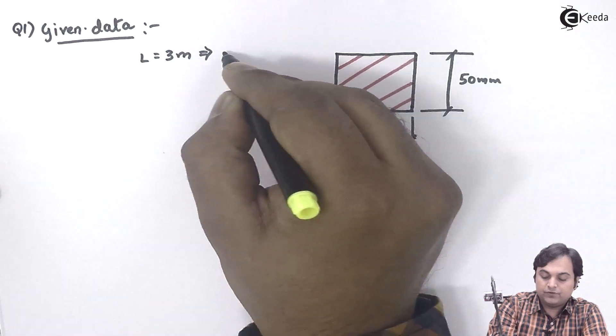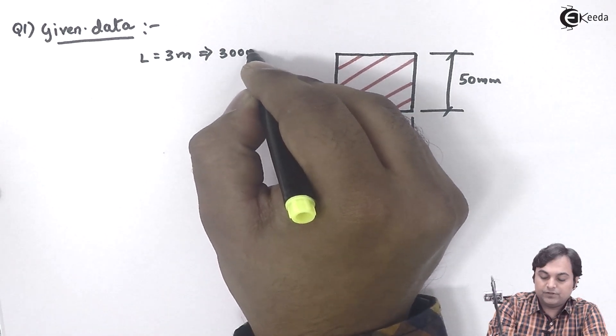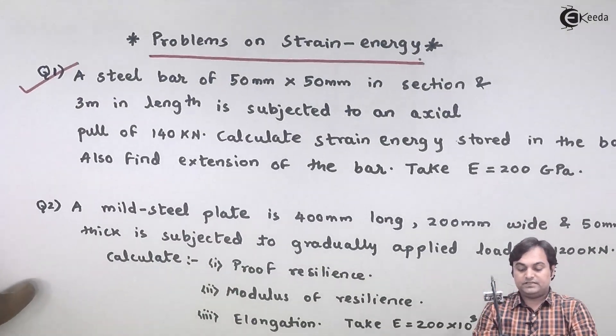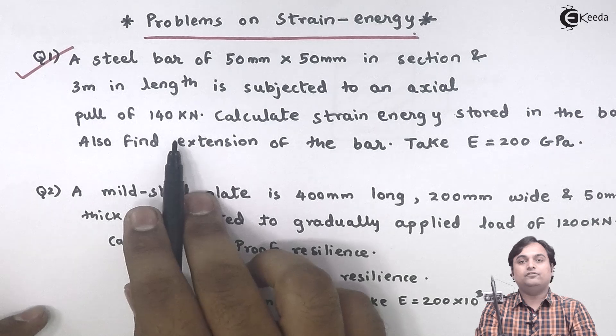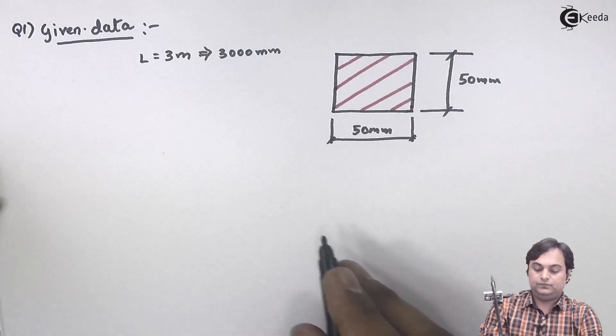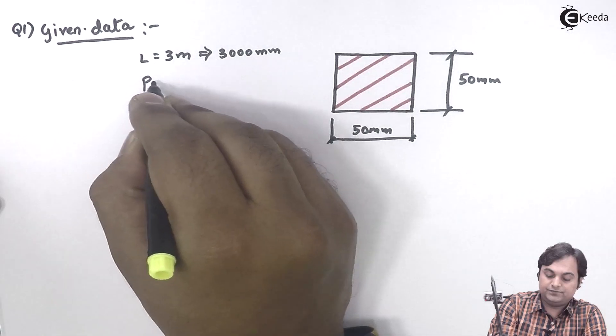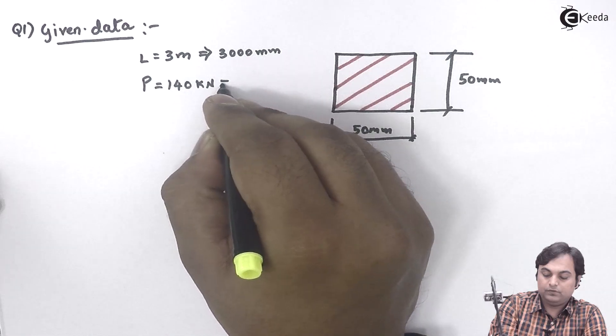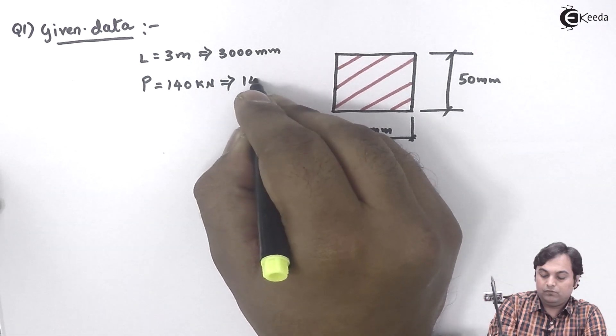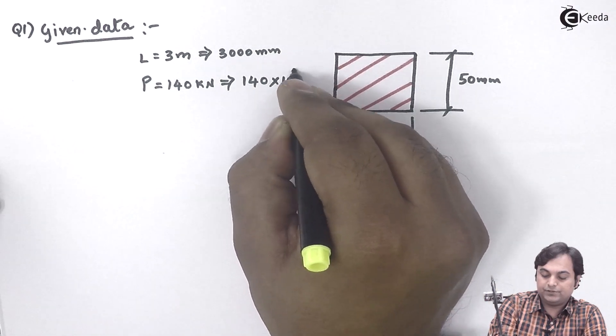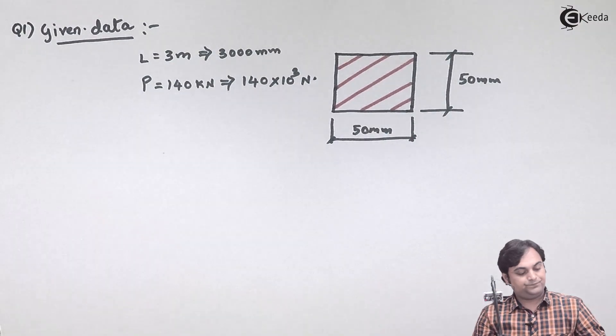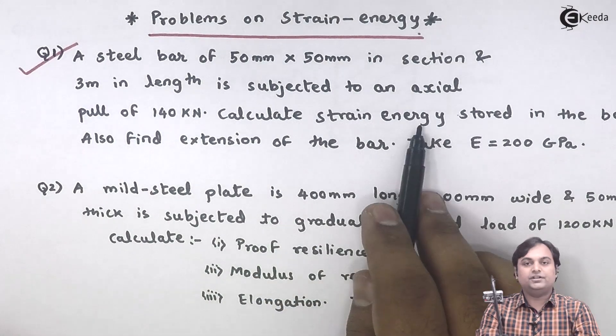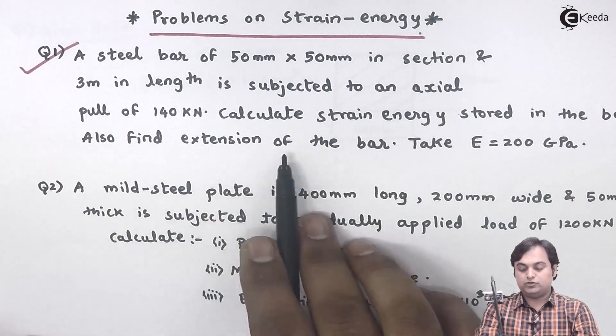Then it is subjected to an axial pull of 140 kilonewtons, so the value of load is 140 kilonewtons, which is 140 times 10 to the power 3 Newtons.